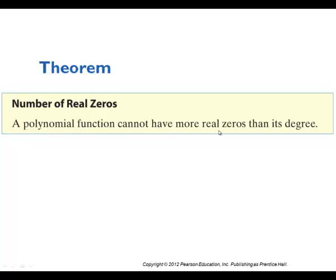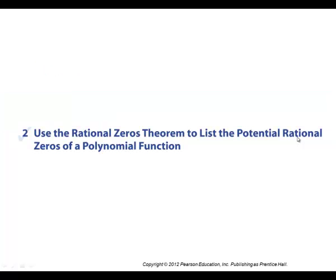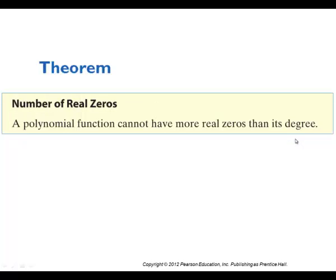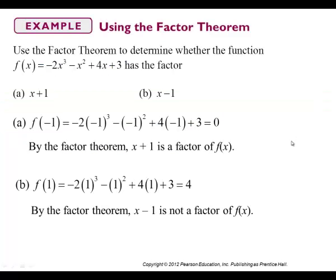A polynomial function cannot have more real zeros than its degree. So in that last example, we cannot have more than three factors — because x − c times x − c times x − c is all the factors we can have.